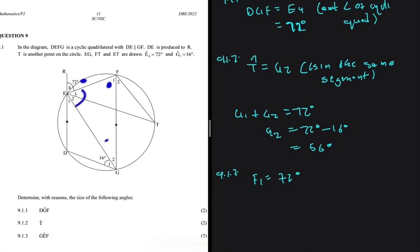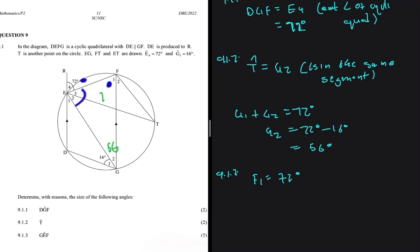But then we know that G2 is equal to 56, so here we have 56. Let me just use a different pen - here we have 56, and then here we have 72.